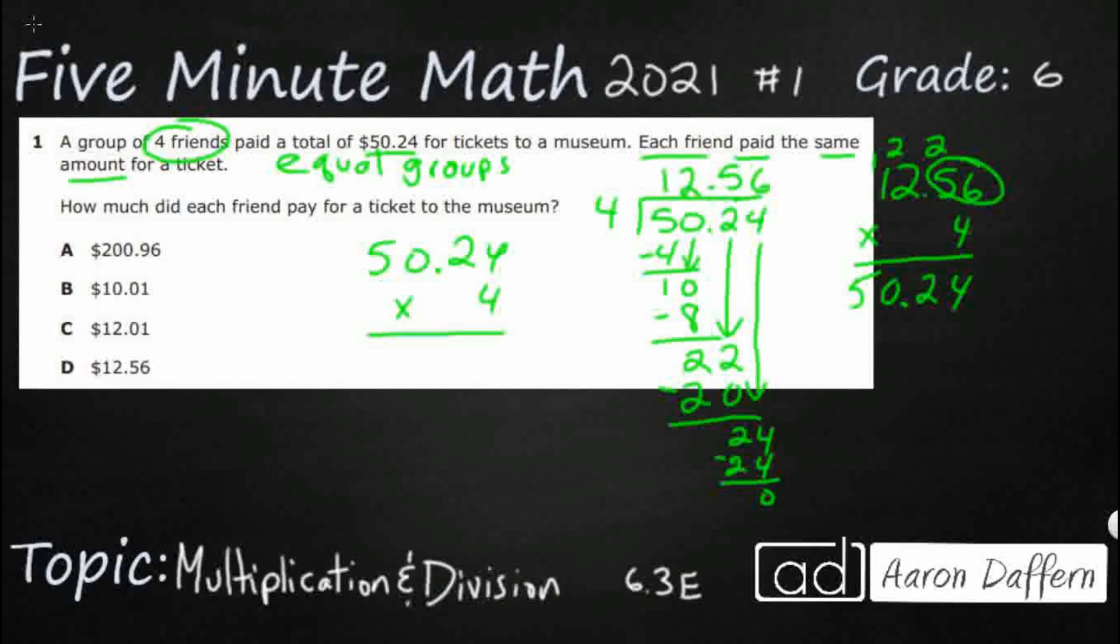Well, four times four is going to be 16, carry that one. Four times two is eight, add that one is nine. Four times zero is zero. And then four times five is 20.